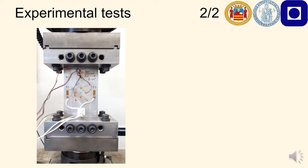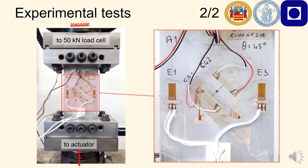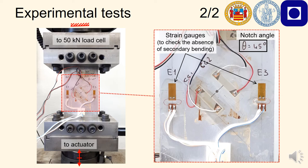Here we can see a picture of a specimen mounted into a fixture. The testing machine was a servo-hydraulic testing machine, equipped with a load cell of 50 kN under dynamic loading. This at right is a close-up of the same specimen, where we wanted to highlight how we instrumented the specimens. In particular, here we are referring to a specimen presenting a notch angle of 45 degrees. For the first specimens tested, we glued four strain gauges, two for each specimen face, so as to check the absence of secondary bending induced by the fixture. We did this only for the first specimens we tested.